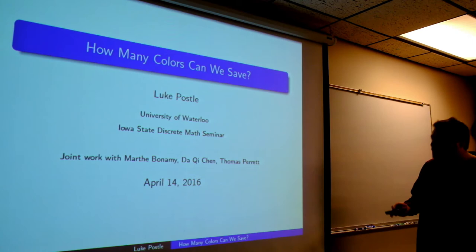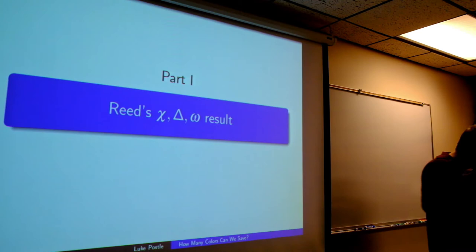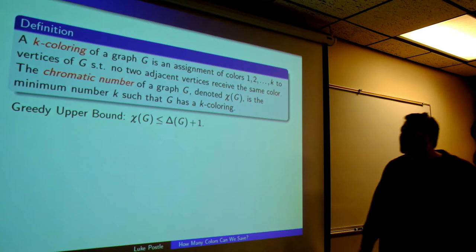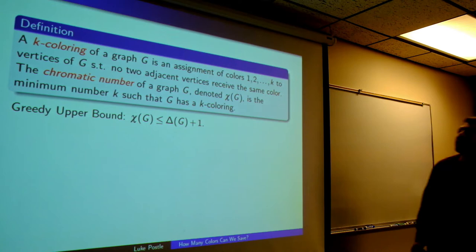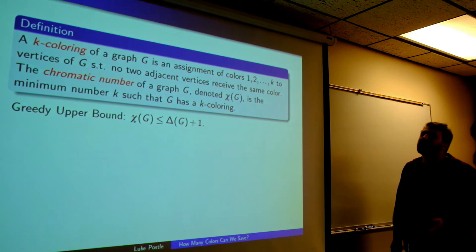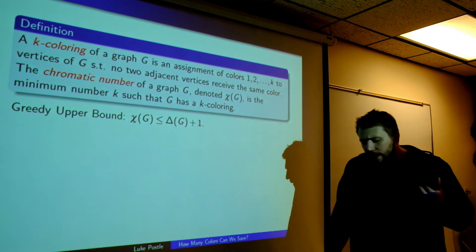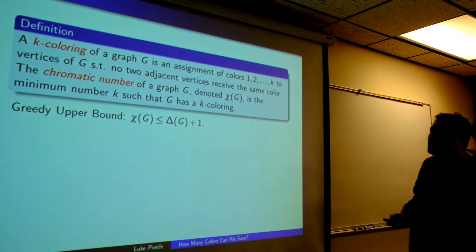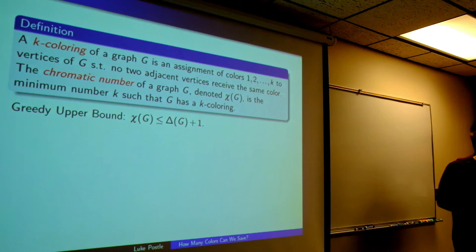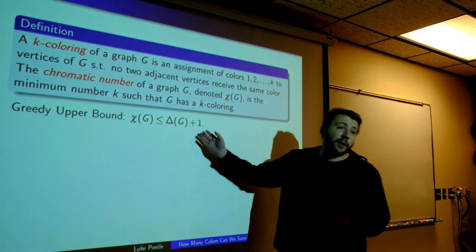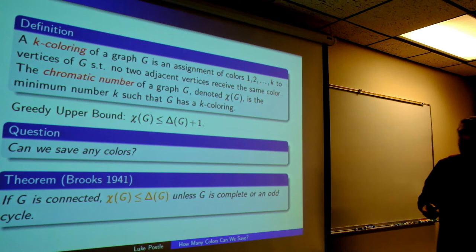Part one: let me tell you about Reed's chi-delta-omega results — here's the soft introduction. A k-coloring of a graph G is an assignment of colors 1 to k such that adjacent vertices do not receive the same color. The chromatic number, denoted chi of G, is the minimum number k such that G has a k-coloring. There are two trivial bounds. One is the greedy upper bound: the chromatic number is at most the maximum degree plus 1. You take an ordering of the vertices and color them greedily — a very standard upper bound, useful in many easy coloring proofs.